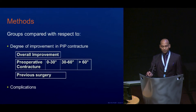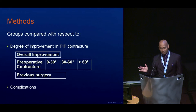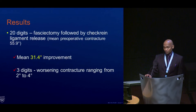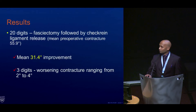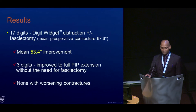The outcomes we measured were overall improvement relative to preoperative contracture, separated by those who had previous surgery and those who did not, and complication identification. The fasciectomy and check rein ligament cohort had a mean improvement of 31.4 degrees, compared to the digit widget cohort at 53.4 degrees, with an average follow-up interval of 18 months.